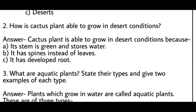Second question: how is the cactus plant able to grow in desert conditions? The answer is: cactus is able to grow in desert conditions because its stem is green and stores water. Second, it has spines instead of leaves, so water loss from the plant is minimized. Third, it has well-developed roots that can manage with very little water.